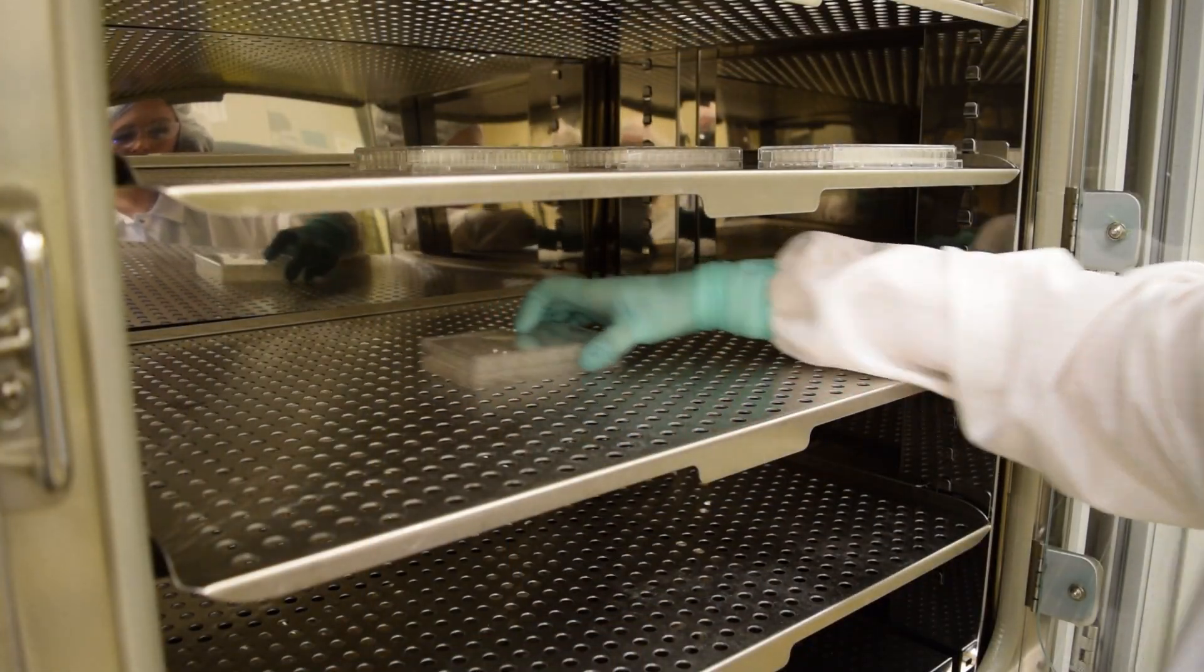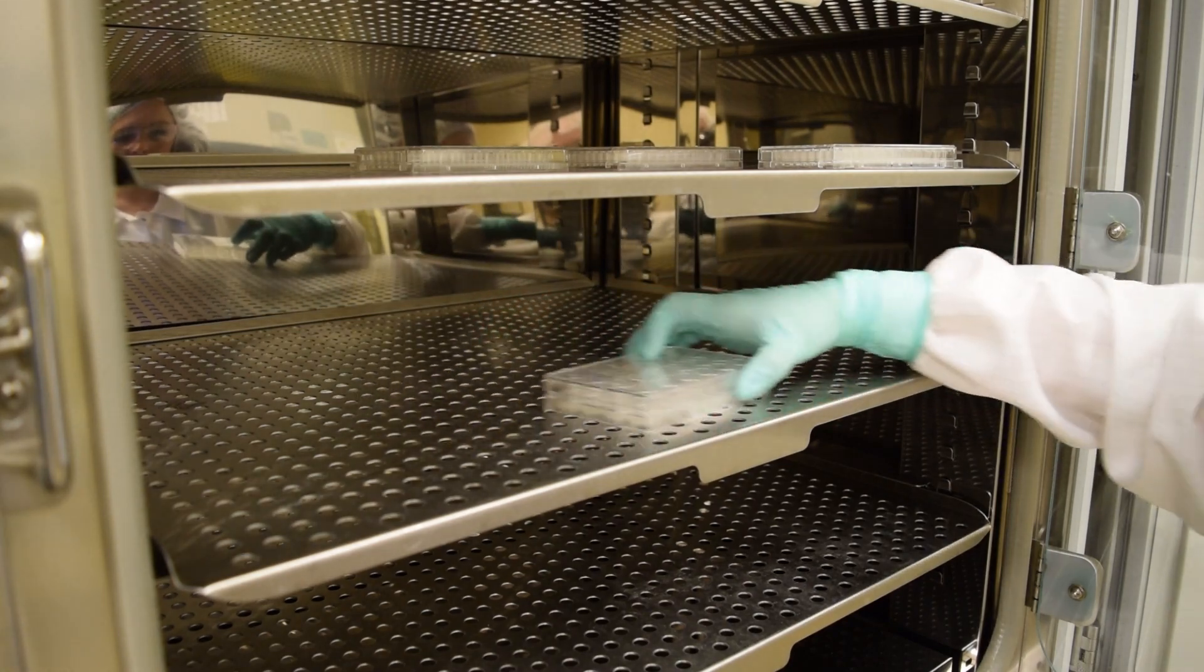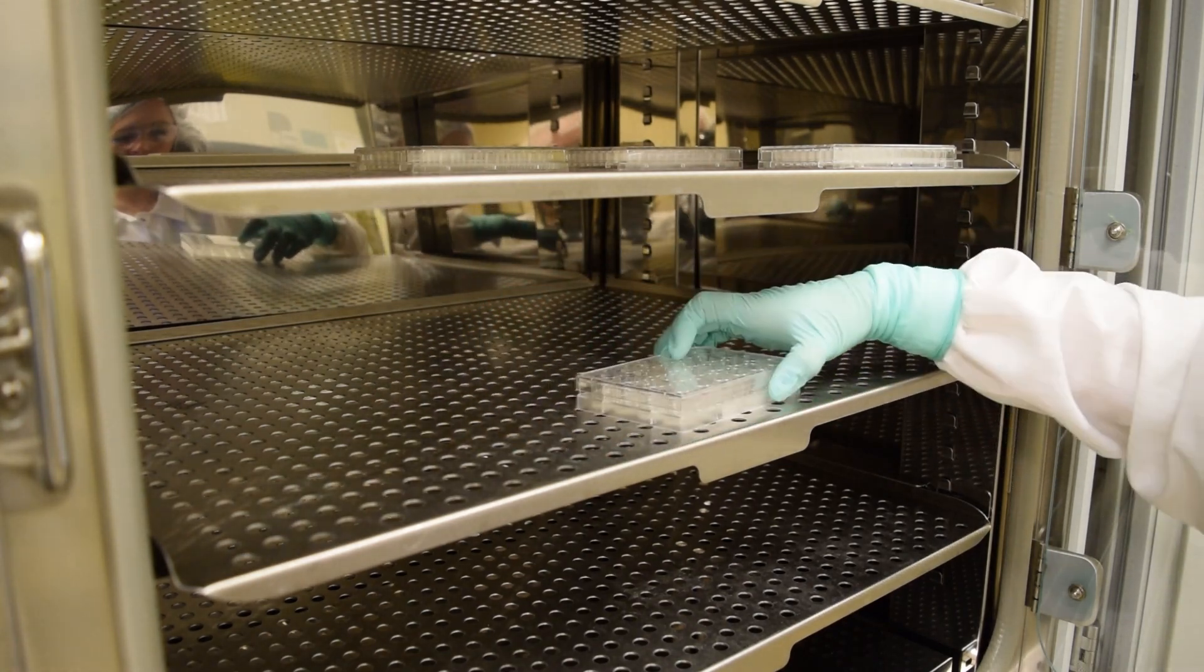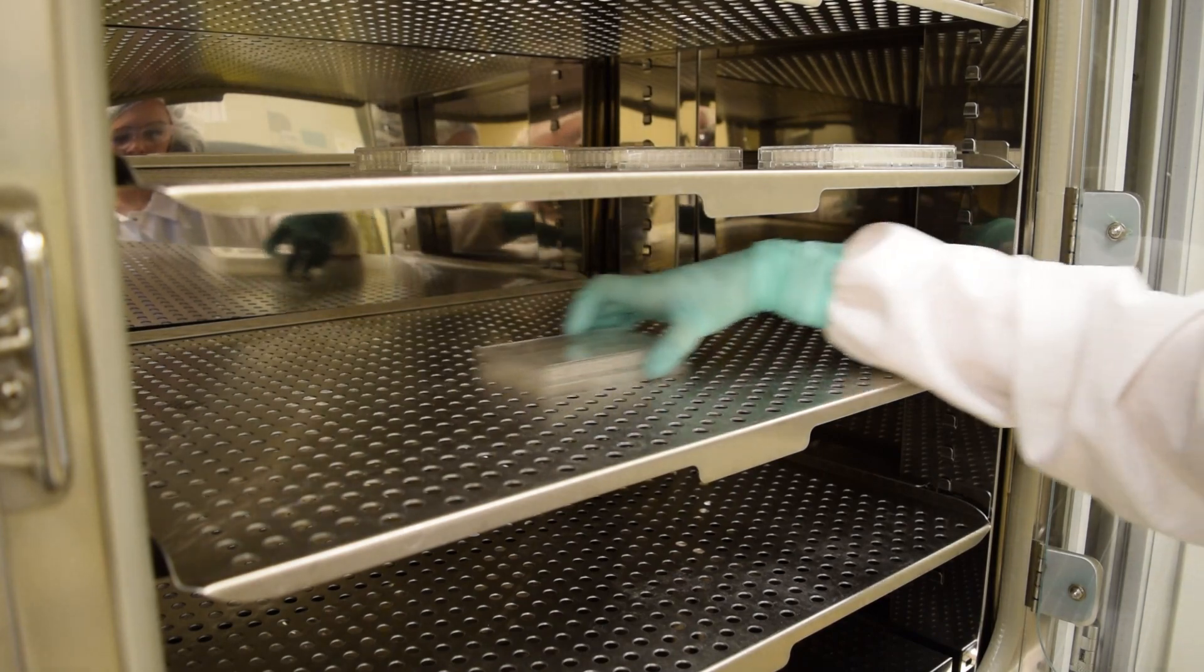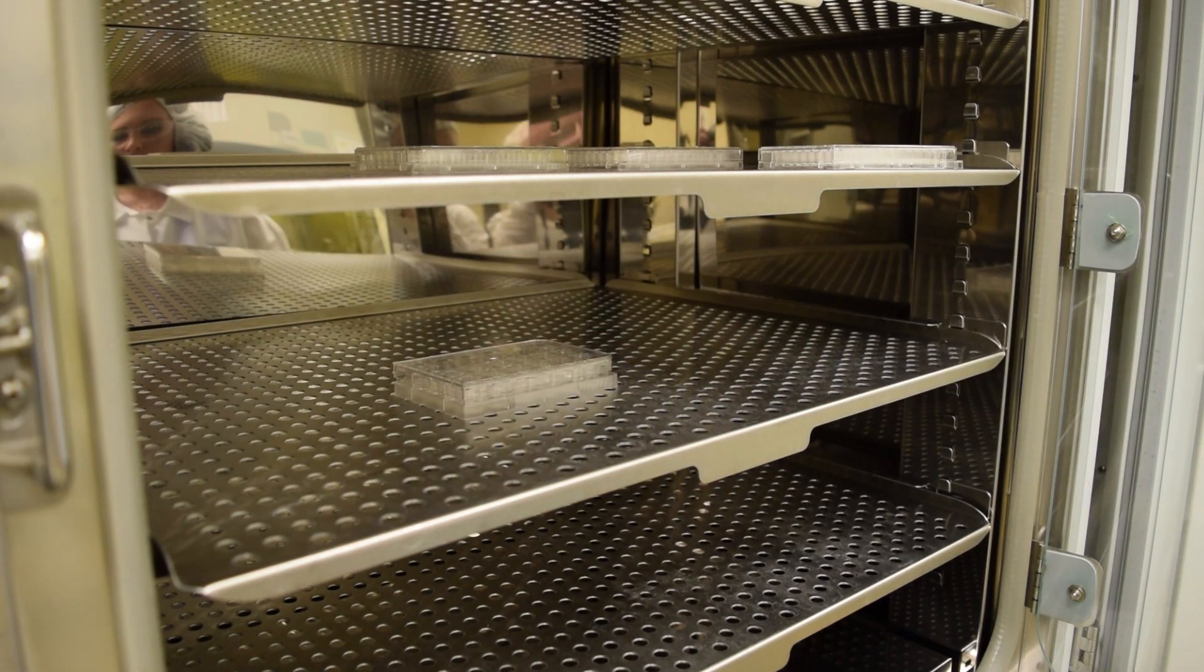For even distribution of the cells, move the plate in a north-south, east-west motion. The exception is the 96-well format. In this case, just place the plate in the incubator with no shaking.